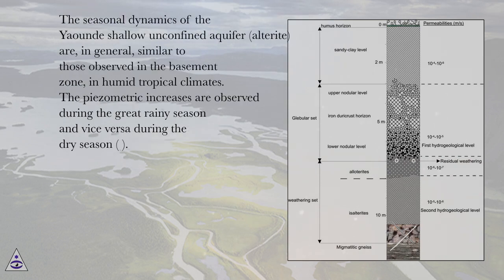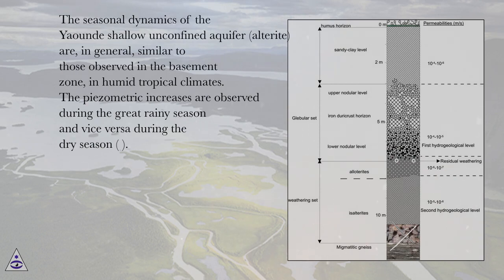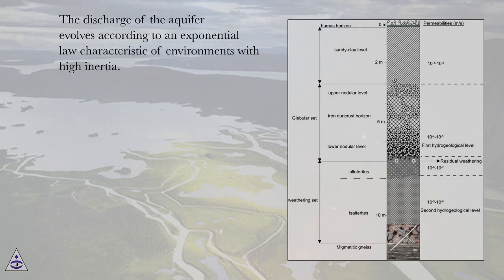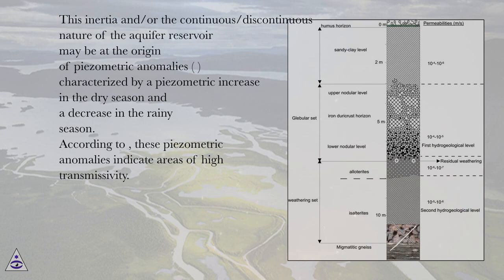The seasonal dynamics of the Yande shallow unconfined aquifer, in the alterite, are in general similar to those observed in the basement zone in humid tropical climates. Piezometric increases are observed during the great rainy season and vice versa during the dry season. The discharge of the aquifer evolves according to an exponential law characteristic of environments with high inertia. This inertia and/or the continuous or discontinuous nature of the aquifer reservoir may be at the origin of piezometric anomalies, characterized by a piezometric increase in the dry season and a decrease in the rainy season.